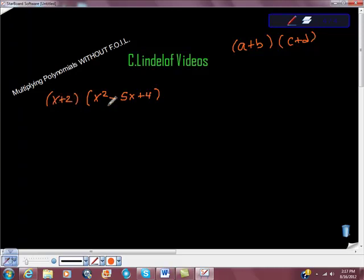Here we have this first one has two terms, the second one has three terms, so we can't use FOIL. So what we're going to do is use the distributive property of multiplication over addition. It just looks like a lot of work, but it's actually very doable. So let's try this.